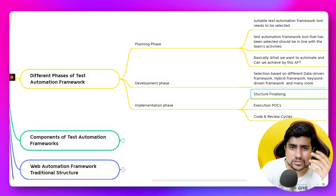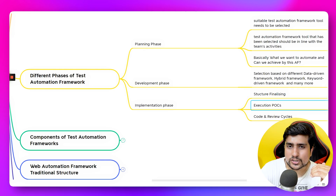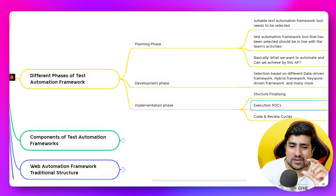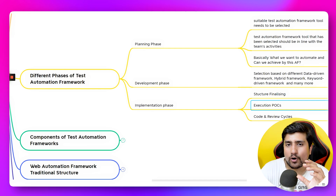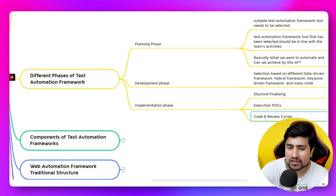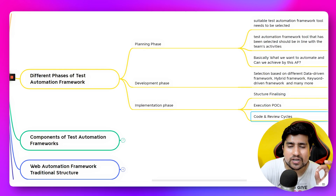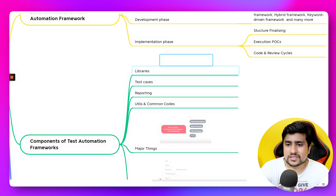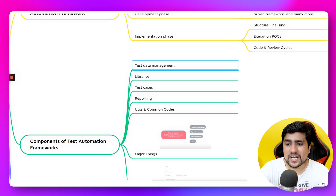The last part is the implementation phase, where you structure the automation framework and run proof-of-concepts (POCs). POCs involve automating a small section of your app, creating a proper structure for your test framework from scratch, and going through code review cycles.